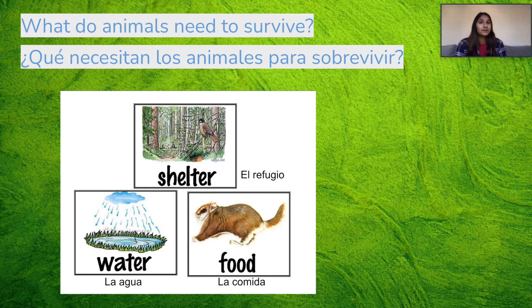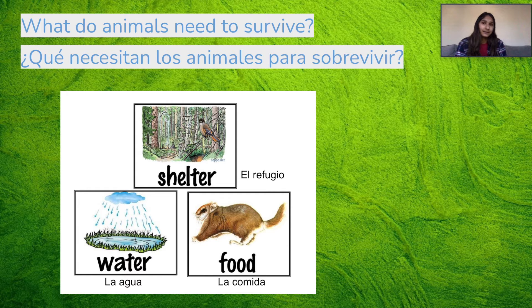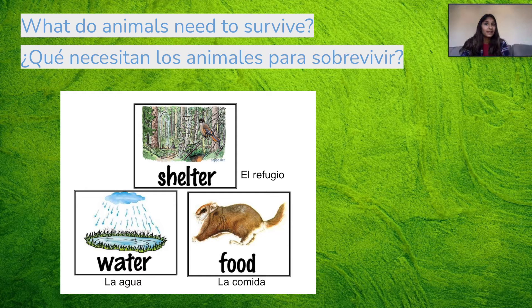So what do animals need to survive in their different ecosystems? The main three are shelter, water, and food — but of course they will also need air too. We'll be focusing on these three today. All organisms need these resources to survive, even us humans.